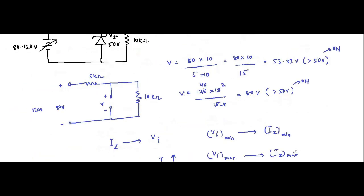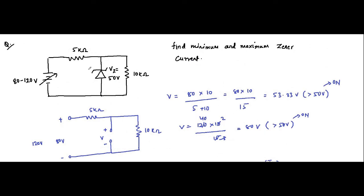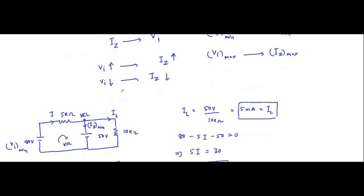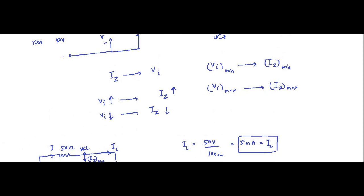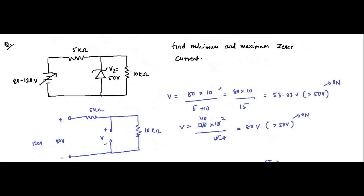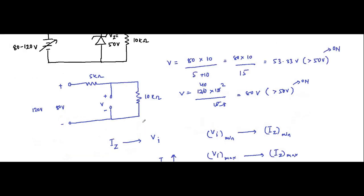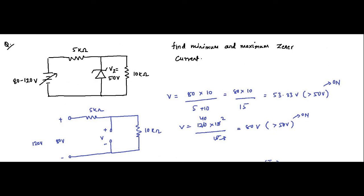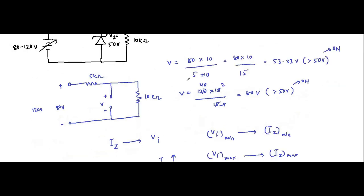So this is the solution. In this circuit the input voltage was variable between 80 volt and 120 volt, which had an effect on the Zener current. Minimum Zener current flows at minimum input voltage, maximum Zener current flows at maximum input voltage. The load current was fixed because the load resistance was fixed, and the Zener breakdown voltage remained the same in both cases — that is the purpose of the Zener diode.